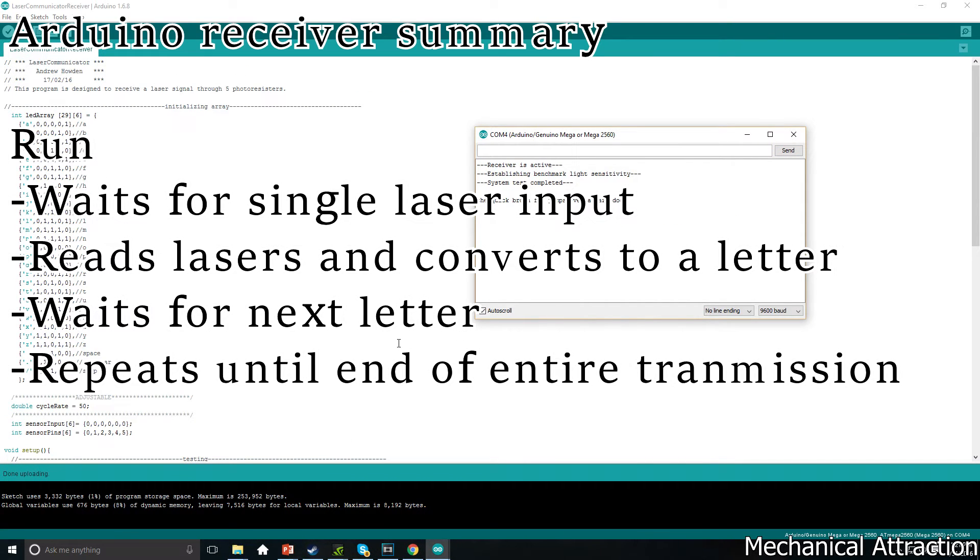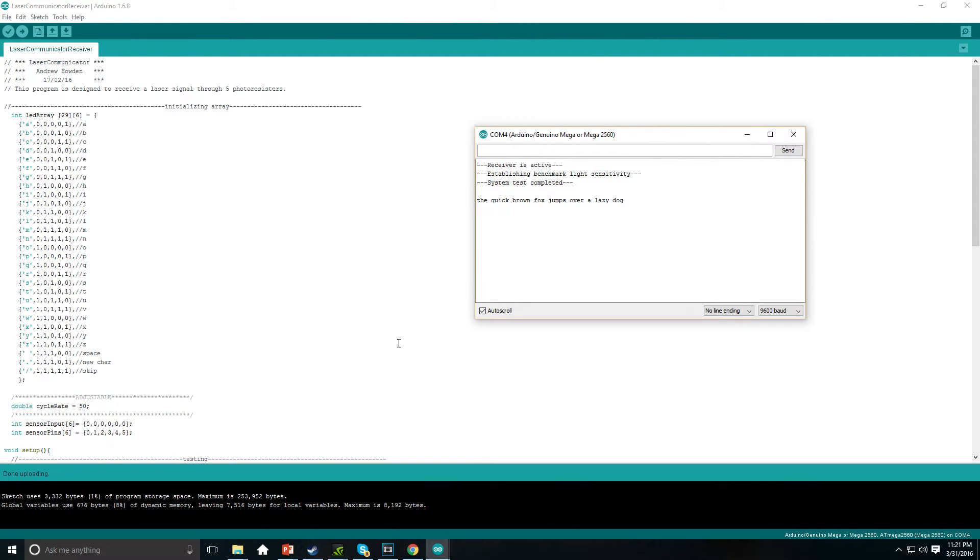The receiver was a little trickier as we had to make it wait for each of the laser inputs to come in, read that, convert it to a letter, then wait for the next letter. After it does this, it will see the end transmission and make a new line.